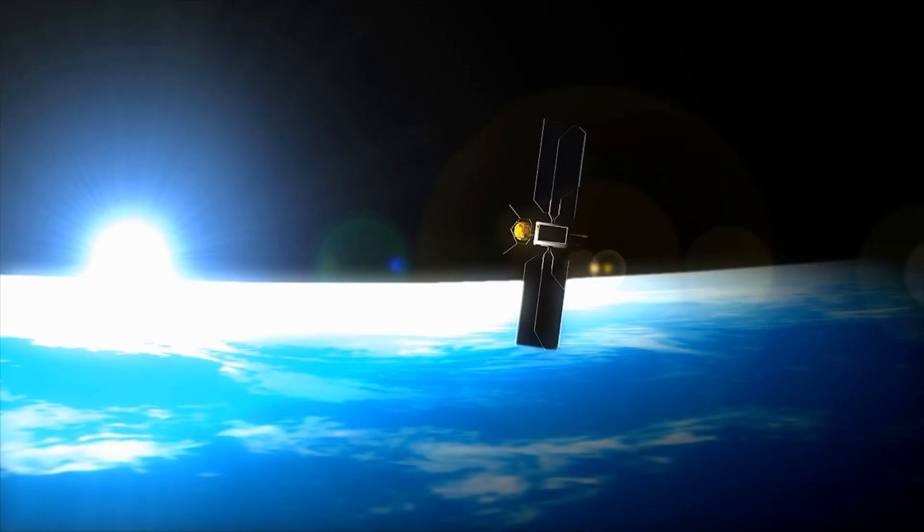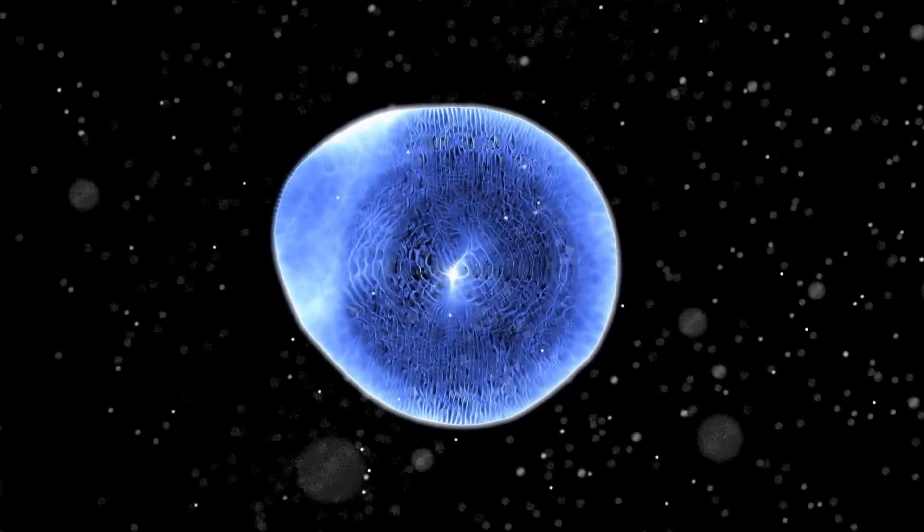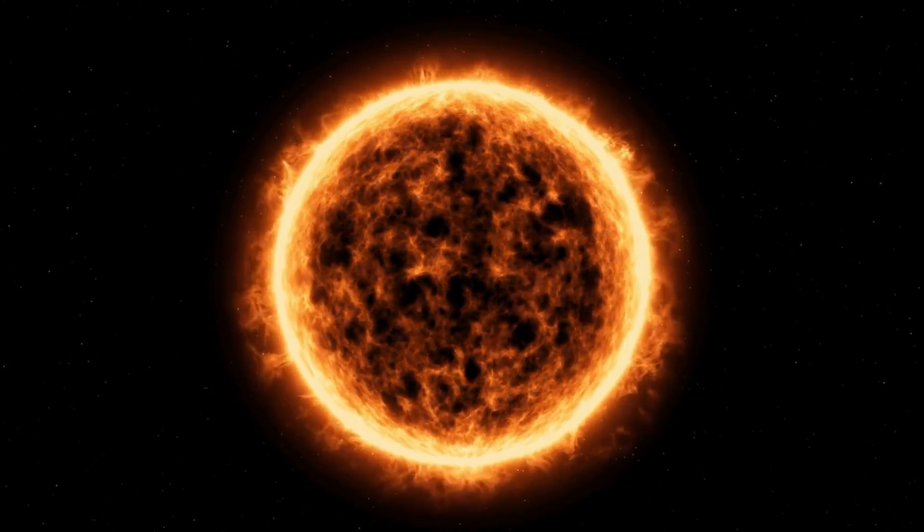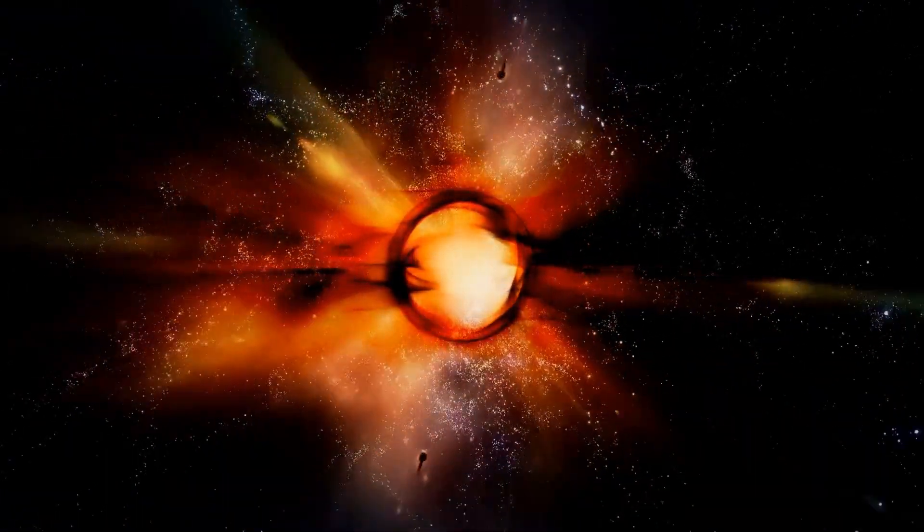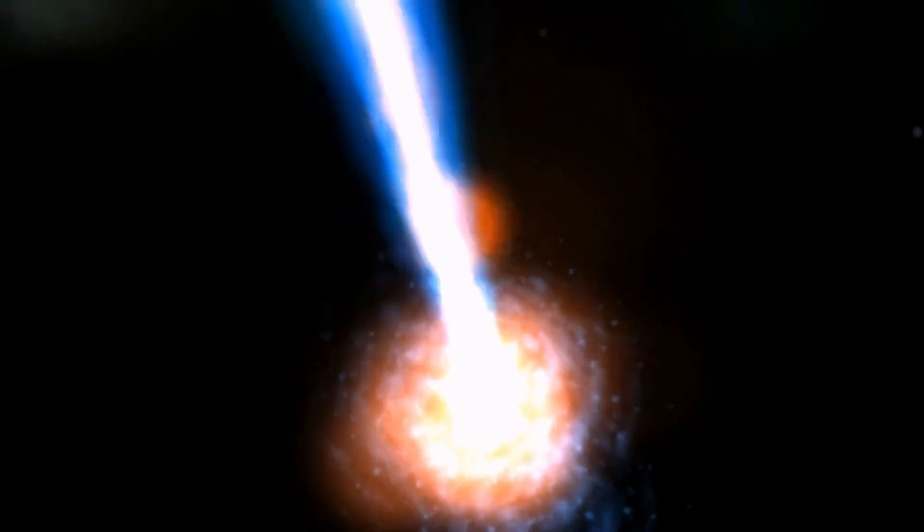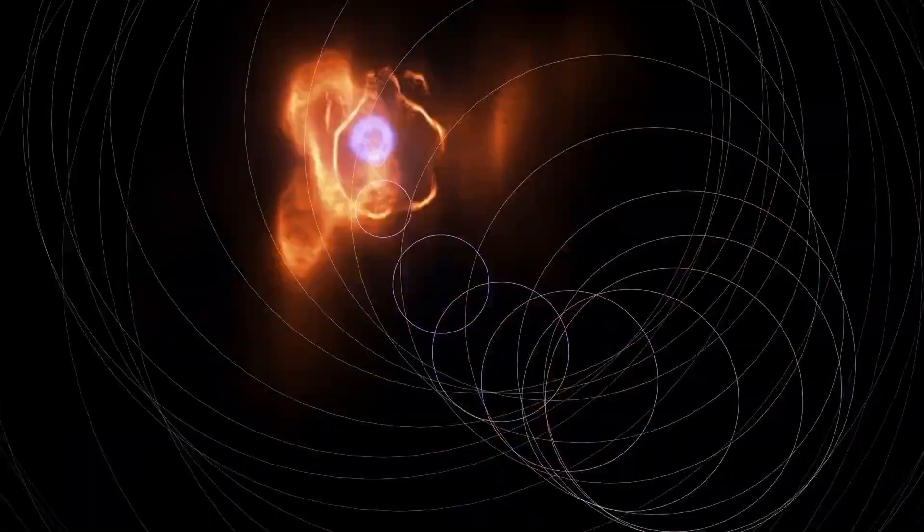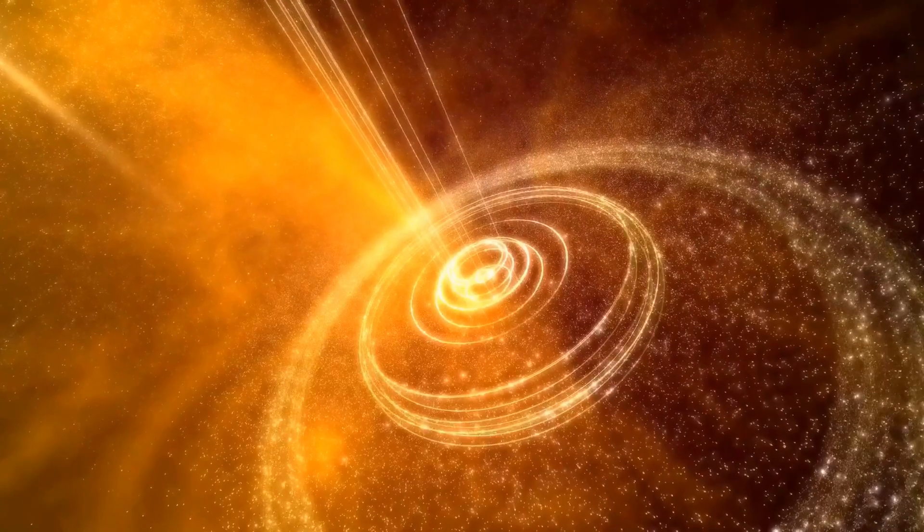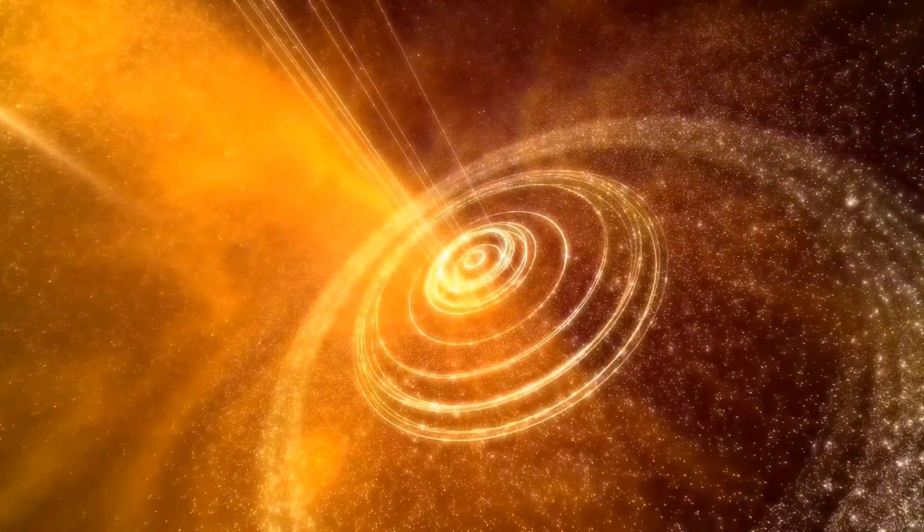The heliosphere itself is like a massive protective bubble powered by the solar wind. Stretching 11 billion miles from the Sun, it shields us from harmful cosmic radiation. But this bubble isn't static. It's constantly shaped by the Sun's magnetic field and the galaxy's forces.